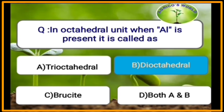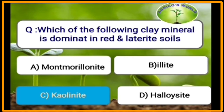In an octahedral unit, when aluminium is present, it is called di-octahedral. Which of the following clay mineral is dominant in red and laterite soils? Kaolinite is the clay mineral dominant in red and laterite soils. Kaolinite is a 1:1 type of clay mineral.